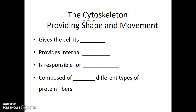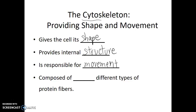The prefix cyto simply means cell, so the cytoskeleton is the skeleton of the cell. And this cytoskeleton does for the cell what our skeleton does for us — it gives the cell its shape, it provides internal structure, and it is also responsible for movement of the cell. The cytoskeleton is composed of three different types of protein fibers.